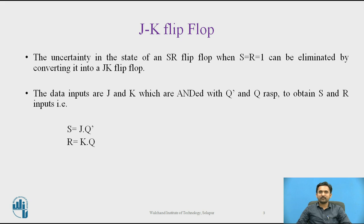The data inputs are J and K, which are ANDed with Q-bar and Q respectively, to obtain S and R inputs — that is, S equals J AND Q-complement, and R equals K AND Q. The JK Flip-Flop is basically a gated SR Flip-Flop with the addition of clock input circuitry that prevents the illegal or invalid output condition that can occur when both inputs S and R equal logic level 1.